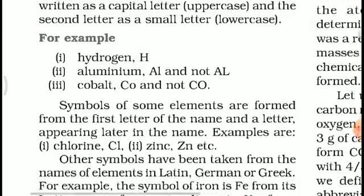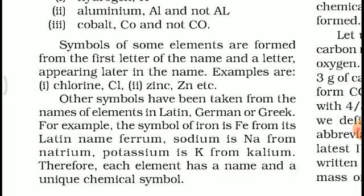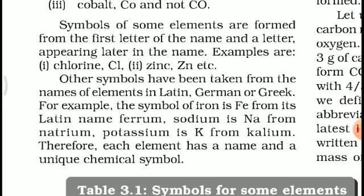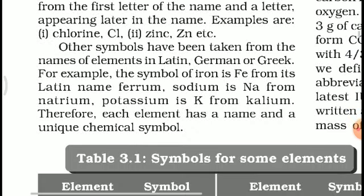Some symbols are formed from the first letter of the name and a letter appearing later in the name. For example, chlorine is Cl (C from the start, l from later in the name); zinc is Zn.